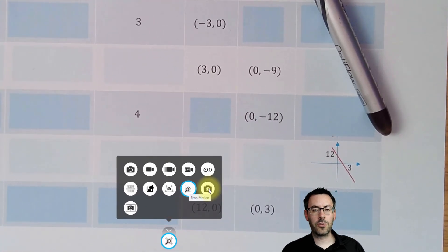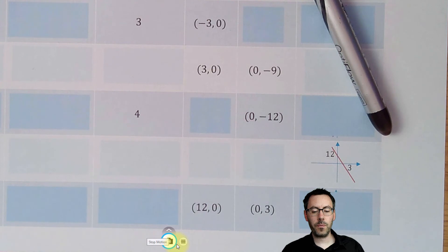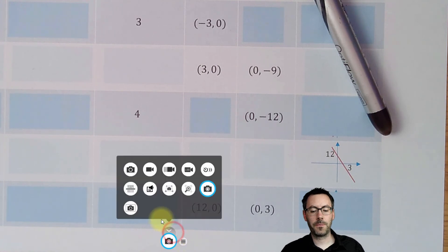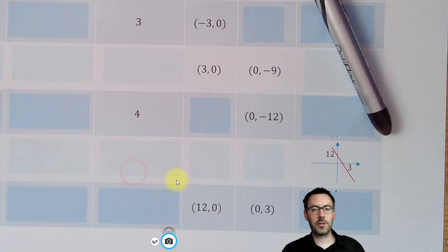Then we've got a stop-motion option, and this will allow us to take individual photos so we can produce a stop-motion video. Rather than the time-lapse, which will be on fixed time periods, this will allow us to choose when we take those pictures. At the bottom, we've got a split-screen option so we can show two different cameras, one either side of the visualizer.